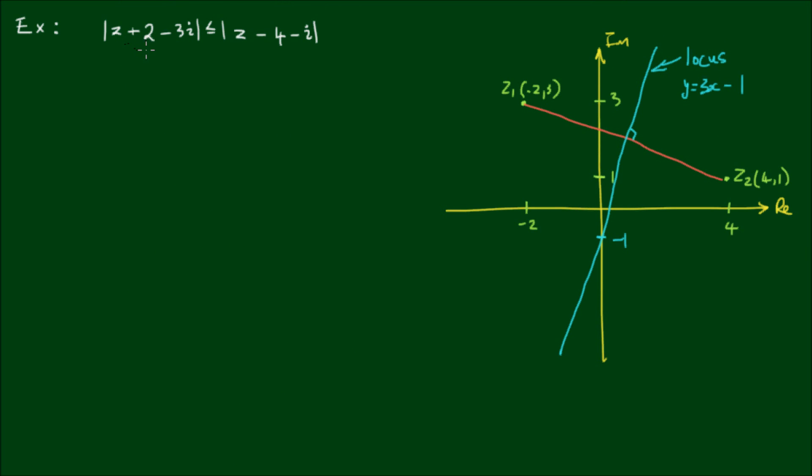Alright, let's quickly look at the case where |z + 2 - 3i| ≤ |z - 4 - i|. So what this means is that if I place my arbitrary z, say here, the distance between z₁ and z and the distance between z₂ and z don't necessarily have to be equal. But this distance must be less than this distance. So in this instance, it's all points that are closer to z₁ than they are to z₂.